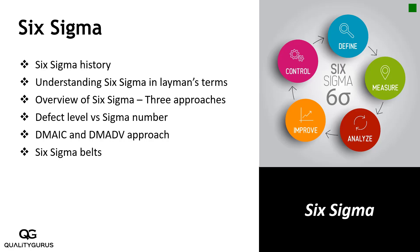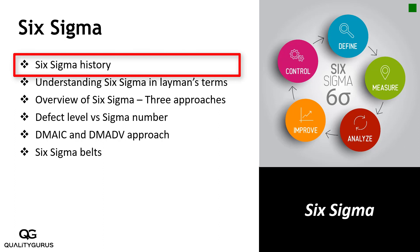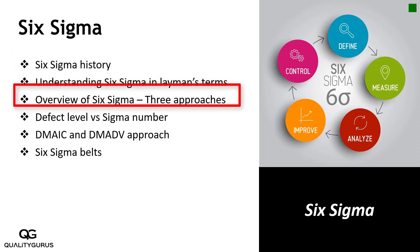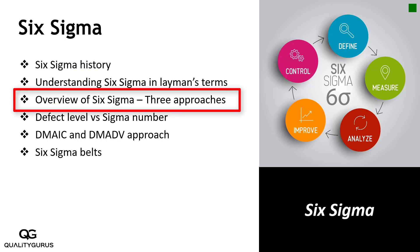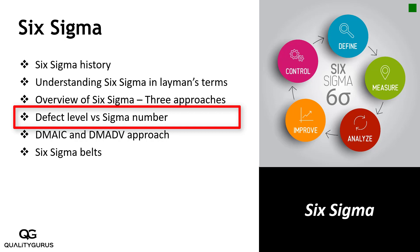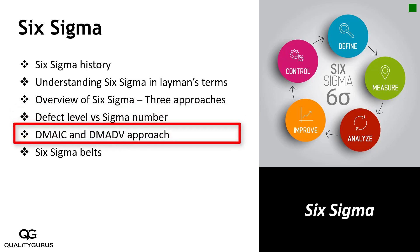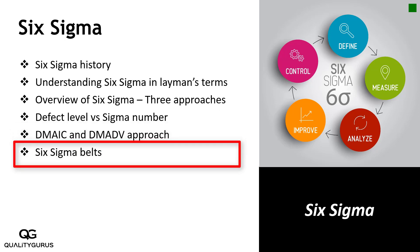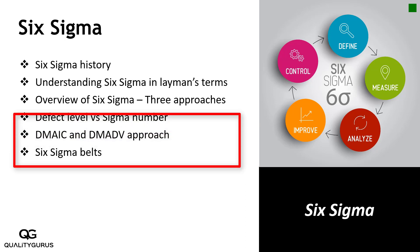In Six Sigma, we will be talking about the history of Six Sigma. I will explain Six Sigma in layman's terms, and then we will look at three approaches for Six Sigma. The next thing will be defect level and sigma number, and then we will talk about DMAIC and DMADV approaches, and then we will talk about Six Sigma belts such as white belt, yellow belt, green belt, and black belt.